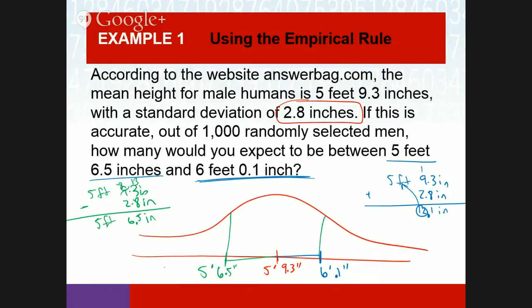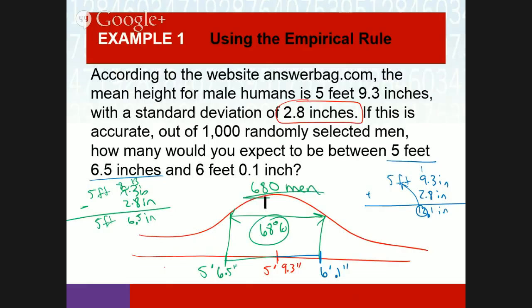That's exactly one standard deviation. Using the empirical rule, 68% of the data falls between those values. If I have 1,000 data points, how many would fall in that range? 680. The empirical rule tells me one standard deviation is 68%, so I expect 680 men out of 1,000.